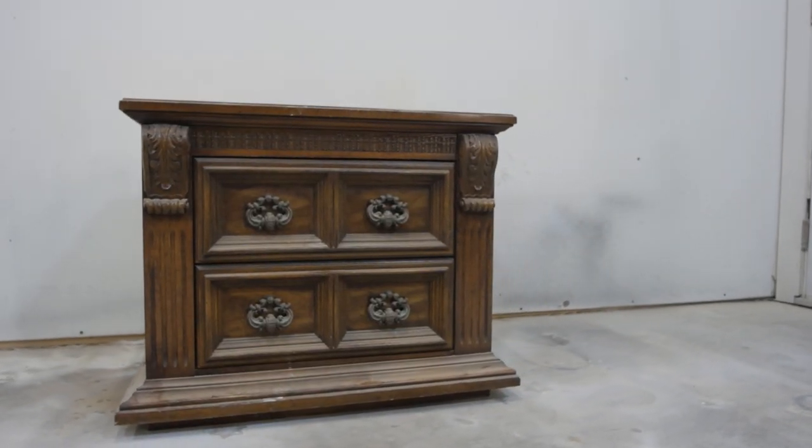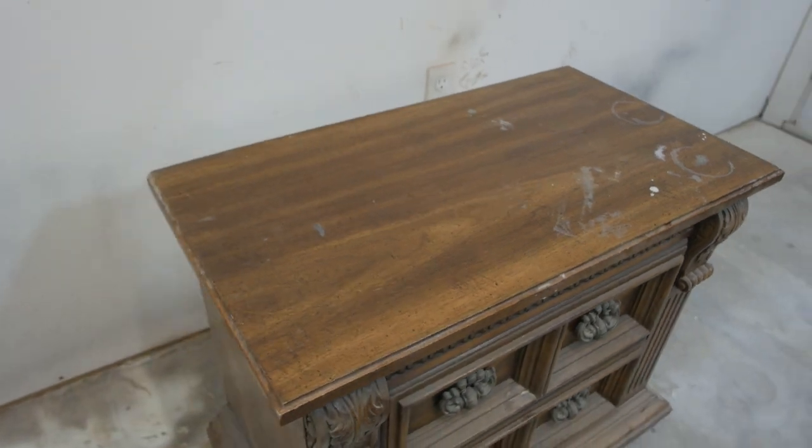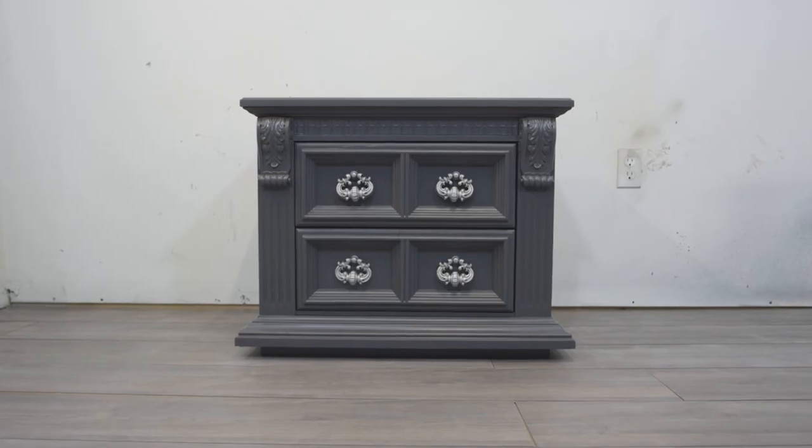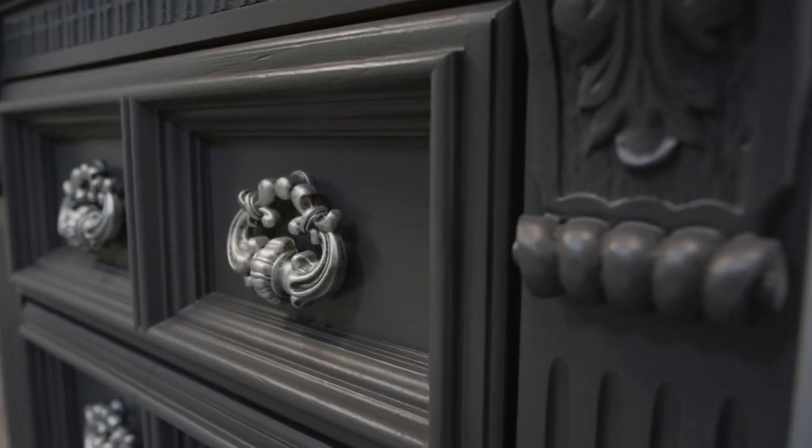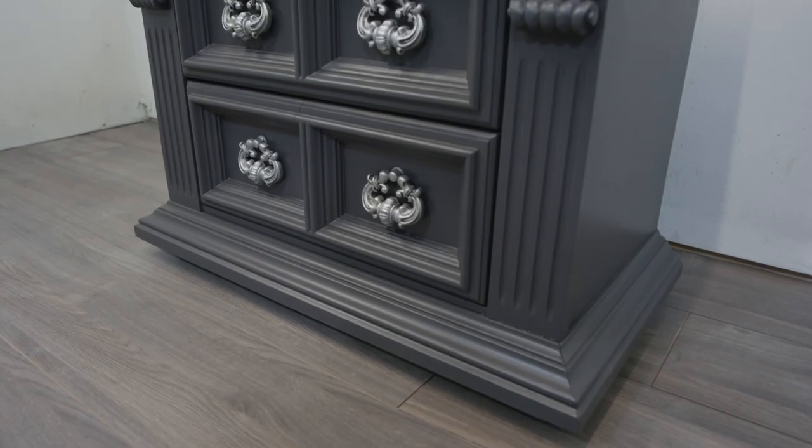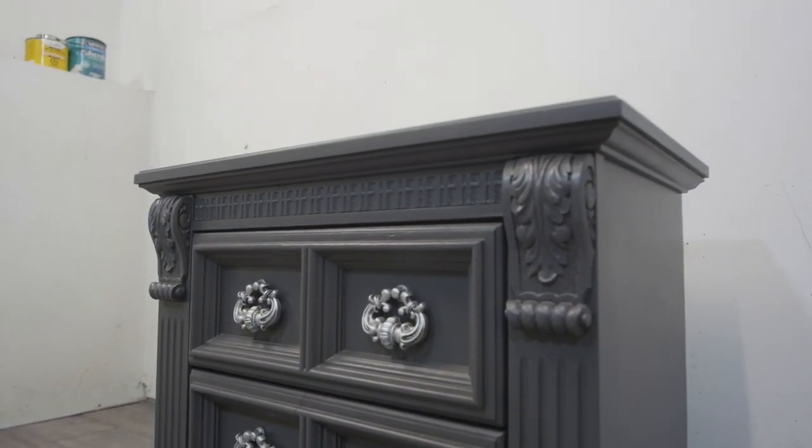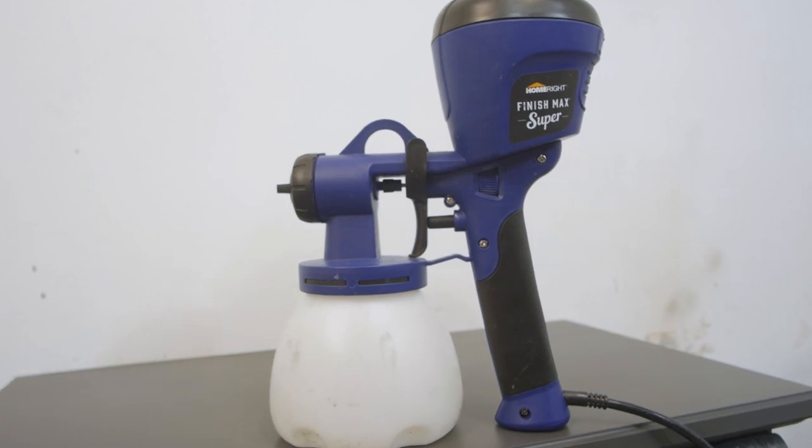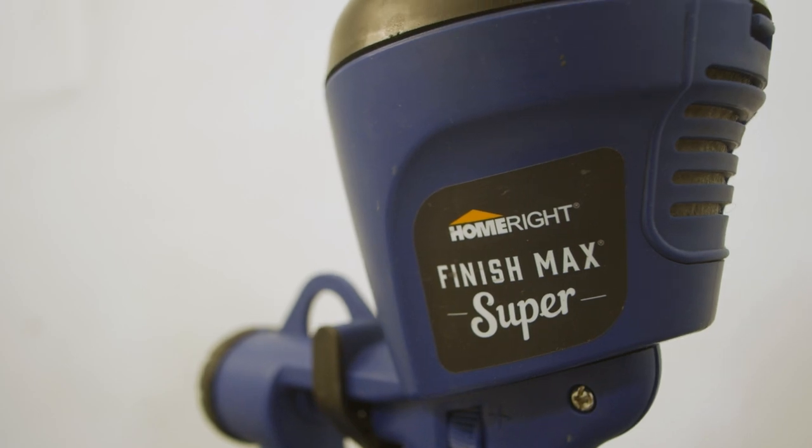And let me show you this nightstand before we use the HomeRite sprayer. And this is what it looks like after. Overall, the HomeRite Super Finish Max was super easy to use. I recommend it for beginners or advanced painters because I couldn't believe how easy it was to use. And it sprayed efficiently and it gave me a nice finish on this nightstand. For the price, you can't go wrong with this spray gun. It is rather low compared to other spray guns I've used. So if you're looking to get started testing spray guns, I highly recommend this one.